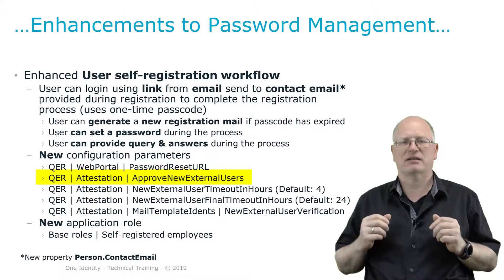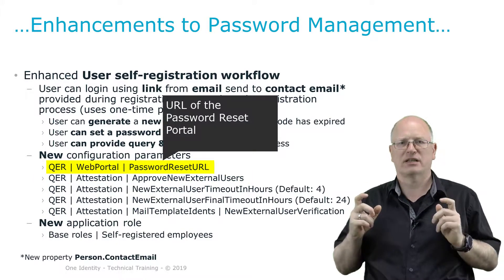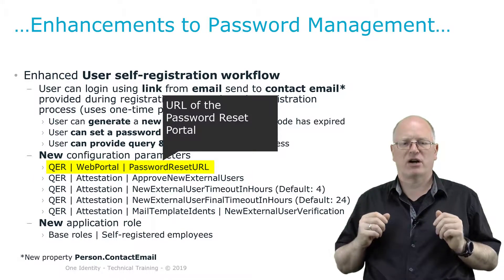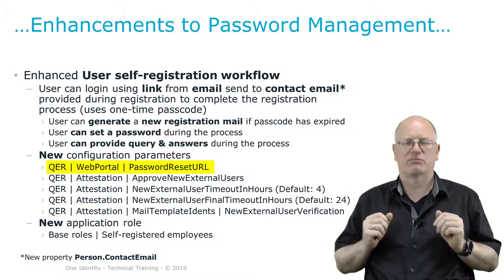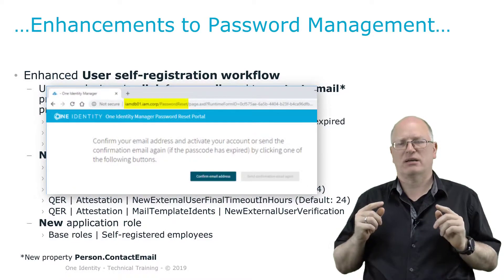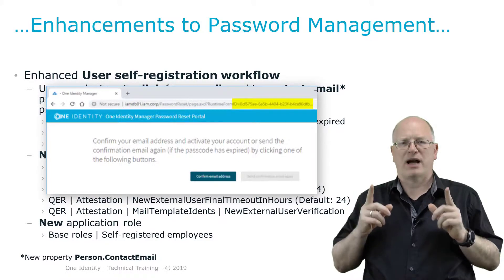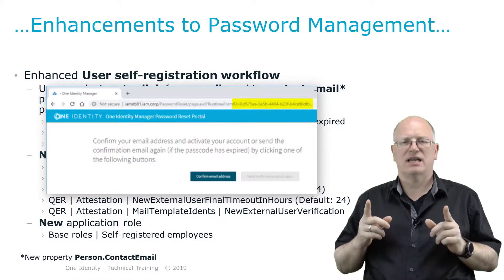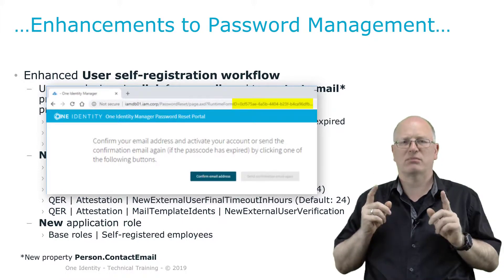Then automatically the user gets enabled and an email gets sent to the user. This email contains a specific URL. The first part of this URL is stored in the configuration parameter QER | Web Portal | PasswordResetURL — this is the URL to the password reset portal. This URL gets a small add-on: it is configured with a passcode, making it a combination of the URL to the password reset portal plus a passcode.